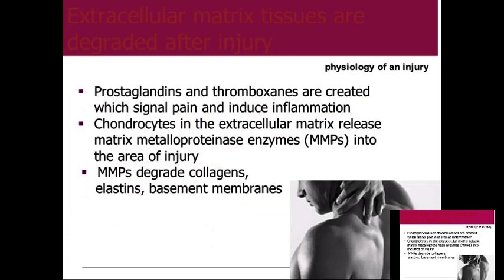When there's an injury, prostaglandins and thromboxanes are created — they signal pain and bring on inflammation. This is supposed to happen. In an acute situation, these things are great. It's when it's chronic that it becomes very destructive. When you sprain your ankle and it gets red, hot, and swollen, that's the first part of inflammation — inflammation is the first sign of healing. It's red because of red blood cells, hot because blood is 98 to 99 degrees, and swollen because of the heparin and histamine dilating those blood vessels.